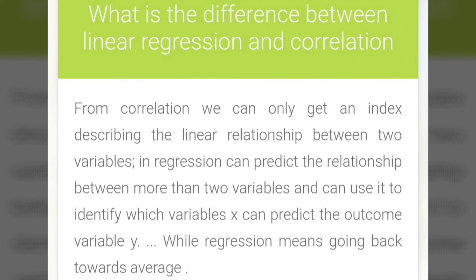What is the difference between linear regression and correlation? From correlation, we can only get an index describing the linear relationship between two variables. In regression, we can predict the relationship between more than two variables and can use it to identify which variable x can predict the outcome of variable y, while regression means going back towards the average.